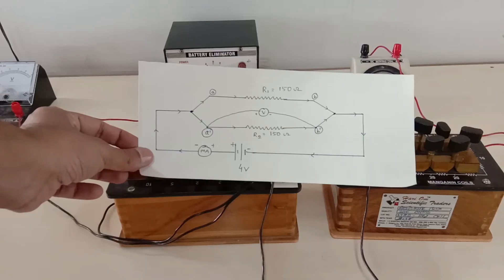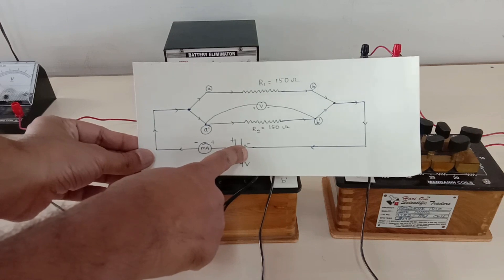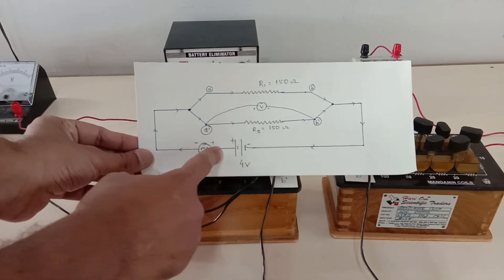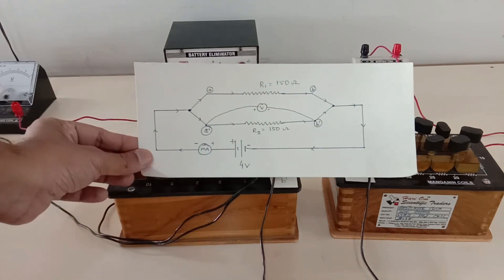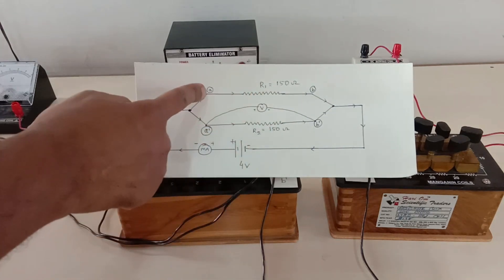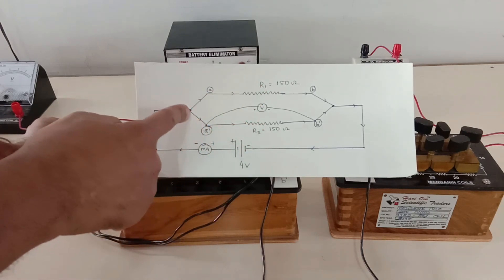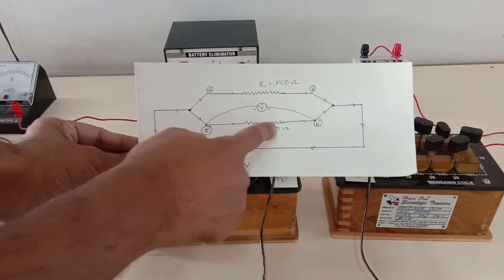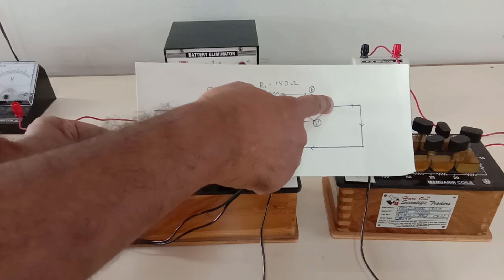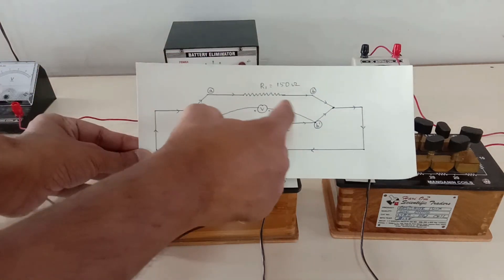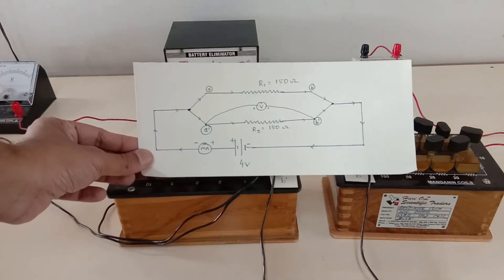This is our circuit diagram. We are using a 4 volt DC output, and current will pass through both resistances. We are using 150 ohm resistances, and I am labeling the two ends as A, B and A-dash, B-dash. Connecting A to A-dash and B to B-dash constitutes the parallel connection. The voltmeter is connected across A-dash and B-dash in parallel.